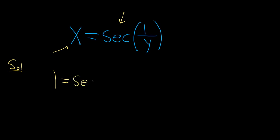So we have secant of 1 over y tangent of 1 over y. And now we have to multiply by the derivative of the inside. So times the derivative of 1 over y.